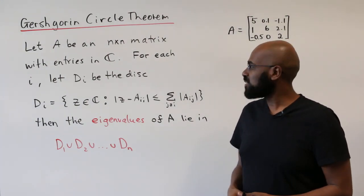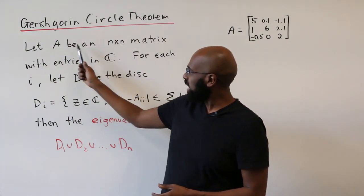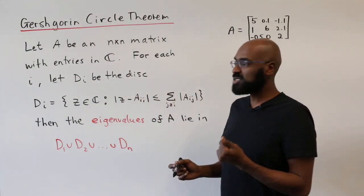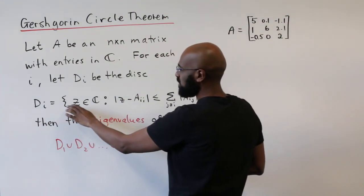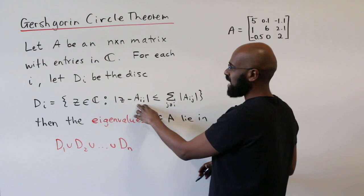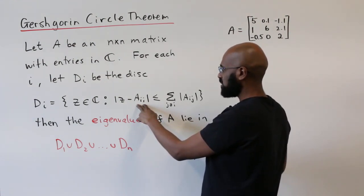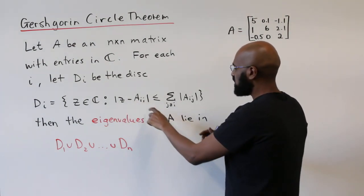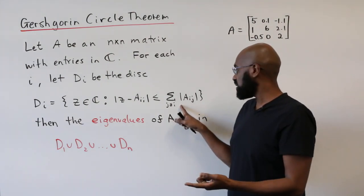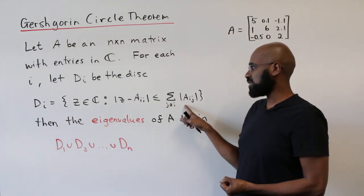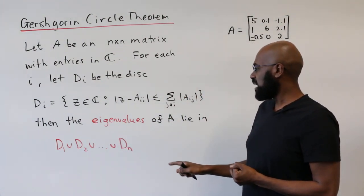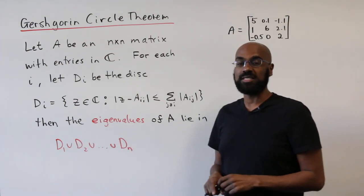So the theorem states something like this. You have a matrix A that's n by n with complex entries. And now we're going to use it to construct some disks. The ith disk is going to be in the complex plane centered at the point Aii from the matrix, whose radius is going to be the sum of the absolute values of the other entries in the ith row of your matrix. And the theorem states that the eigenvalues of your given matrix A lie in the union of these disks.